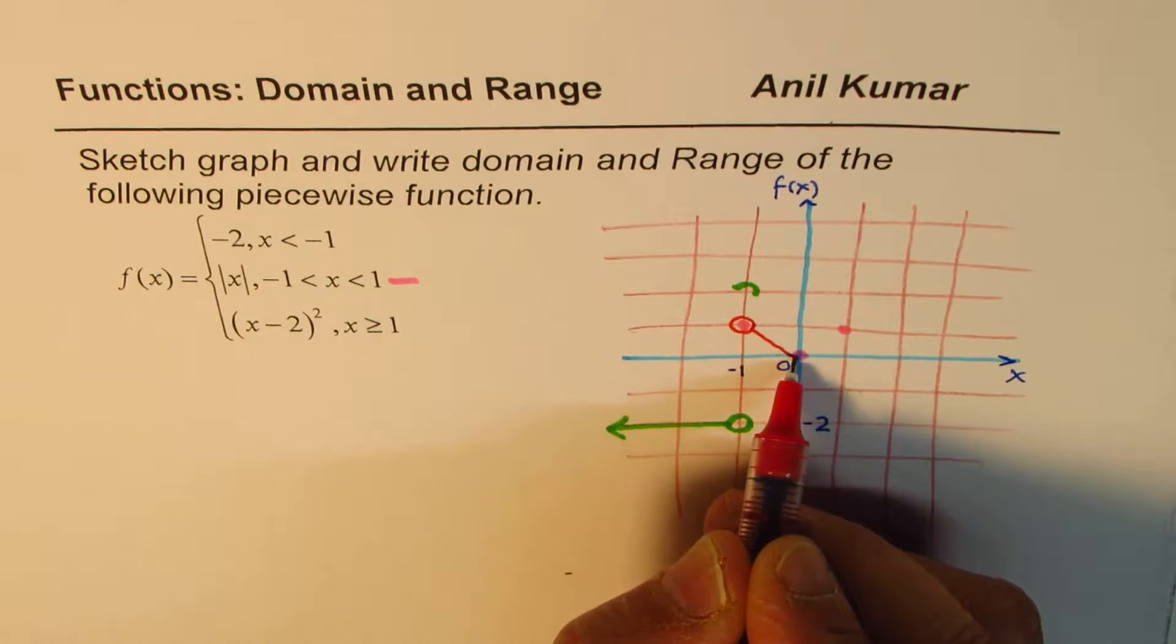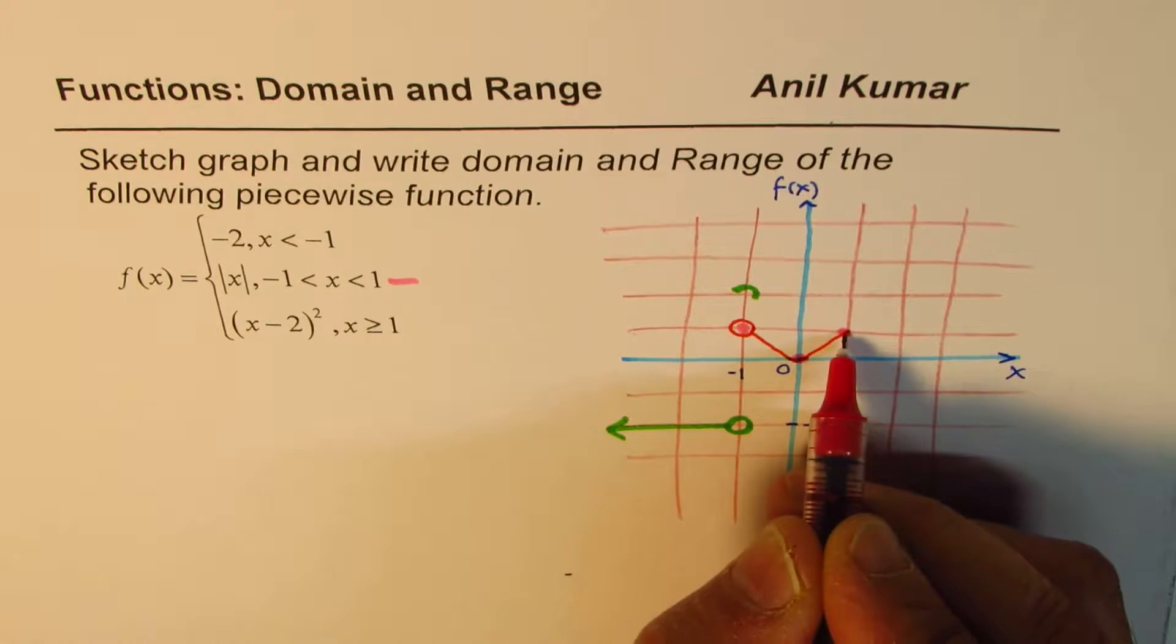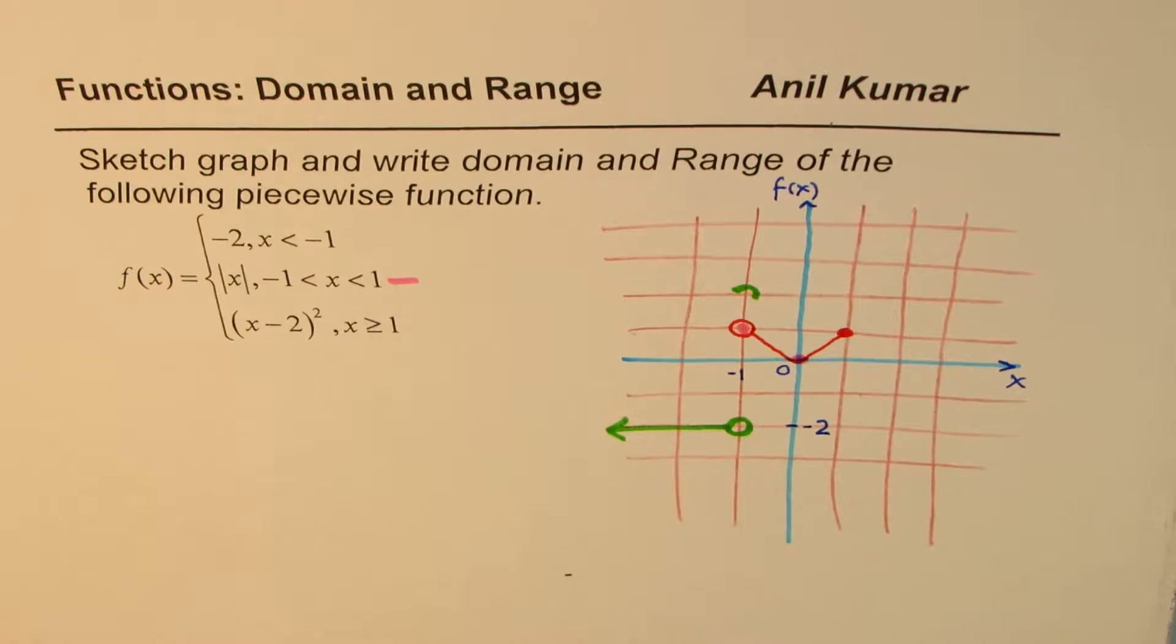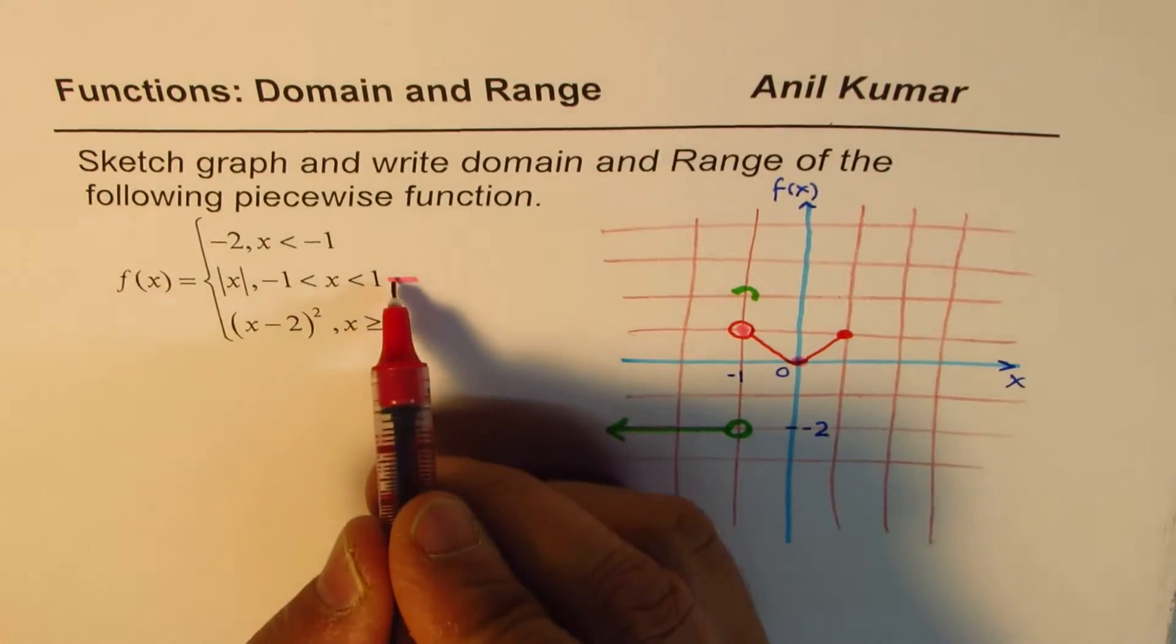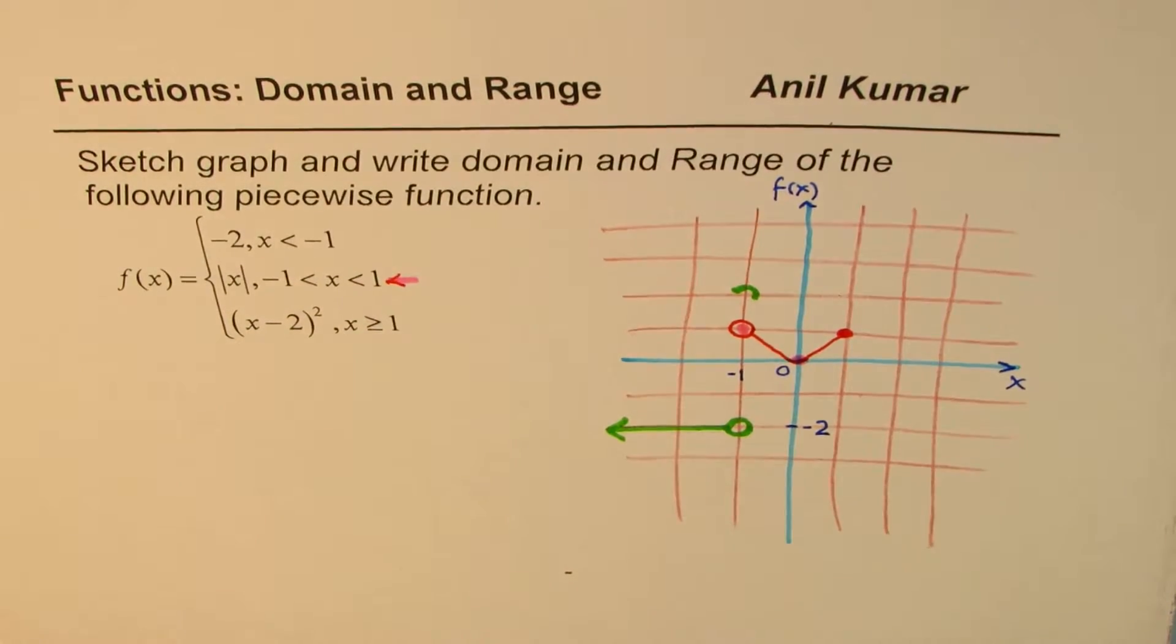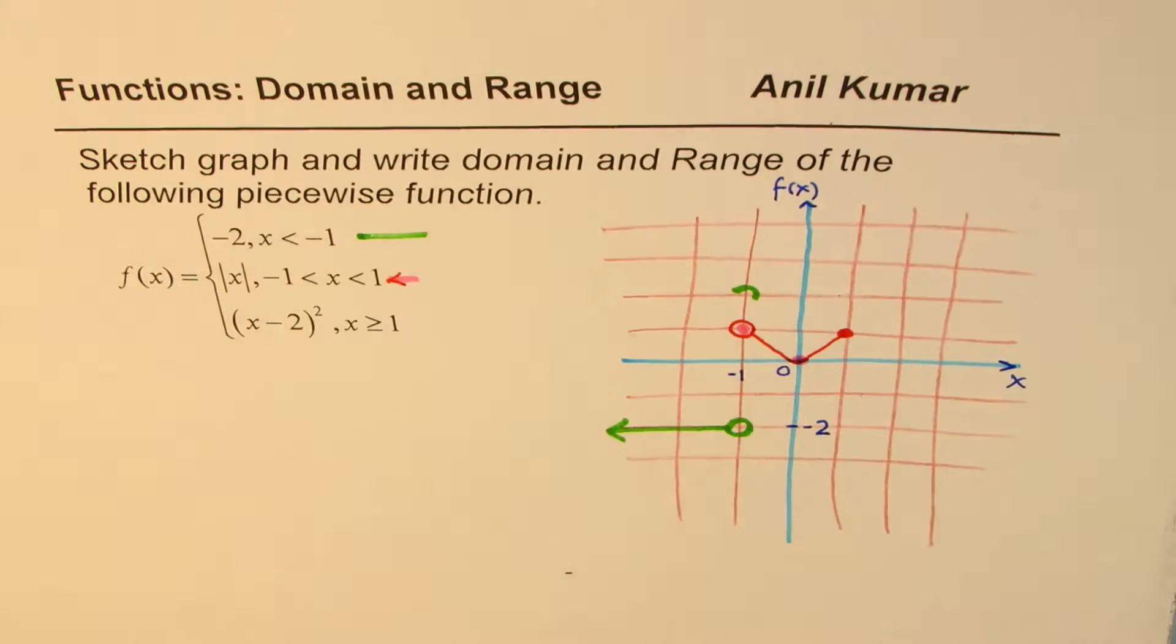And then all of the points are within the graph, and this is closed circle. So that is how it is different. Do you see that part? So this is the center part. So we have drawn two pieces of this piecewise function.